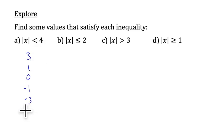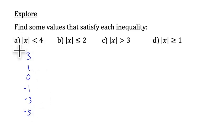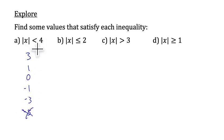But once we get to a number like negative 5, the absolute value of negative 5 equals positive 5, and positive 5 is not less than 4. So that doesn't work. Notice that negative 4 and positive 4 don't work either, because there's no equal bar underneath that inequality sign.